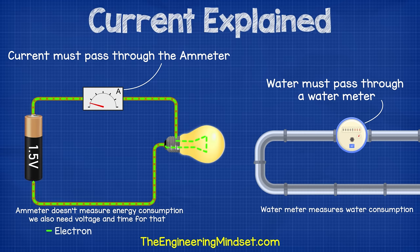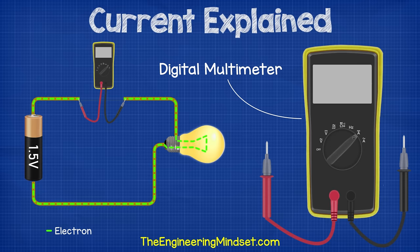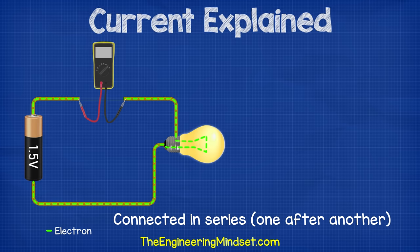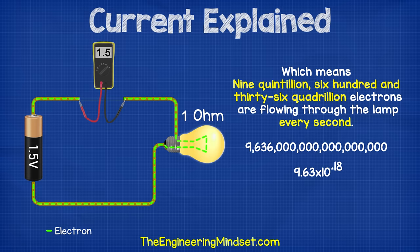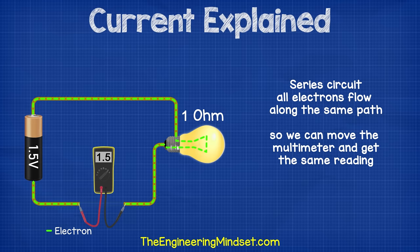Instead of using an ammeter, we're going to use a multimeter as we can do a lot more with this device. I'll leave some links down in the video description where you can pick up a good multimeter cheaply — I highly encourage you to get one for your toolkit. If we connect a lamp to a battery in series, we can measure the current using a multimeter by connecting it in series. If we connect this 1.5 volt battery and this lamp, which has a resistance of one ohm, then we get a current reading of 1.5 amps, which means nine quintillion 636 quadrillion electrons are flowing through the lamp every second. Because it's in series, all the electrons in the circuit are flowing along the same path, so we can move the multimeter and we get the same reading.